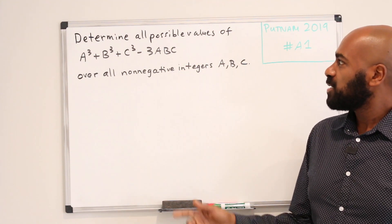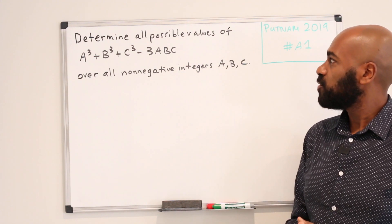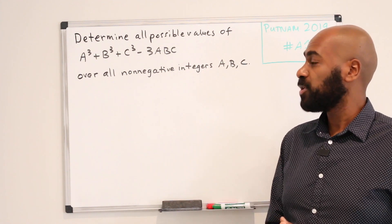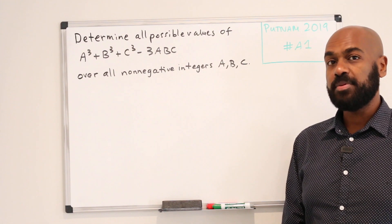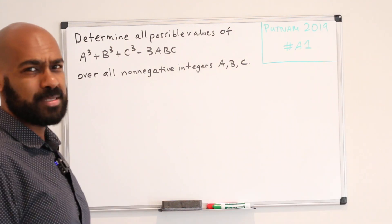Okay, so the problem states determine all possible values of the expression A³ + B³ + C³ - 3ABC over all non-negative integers A, B, and C. Say what?